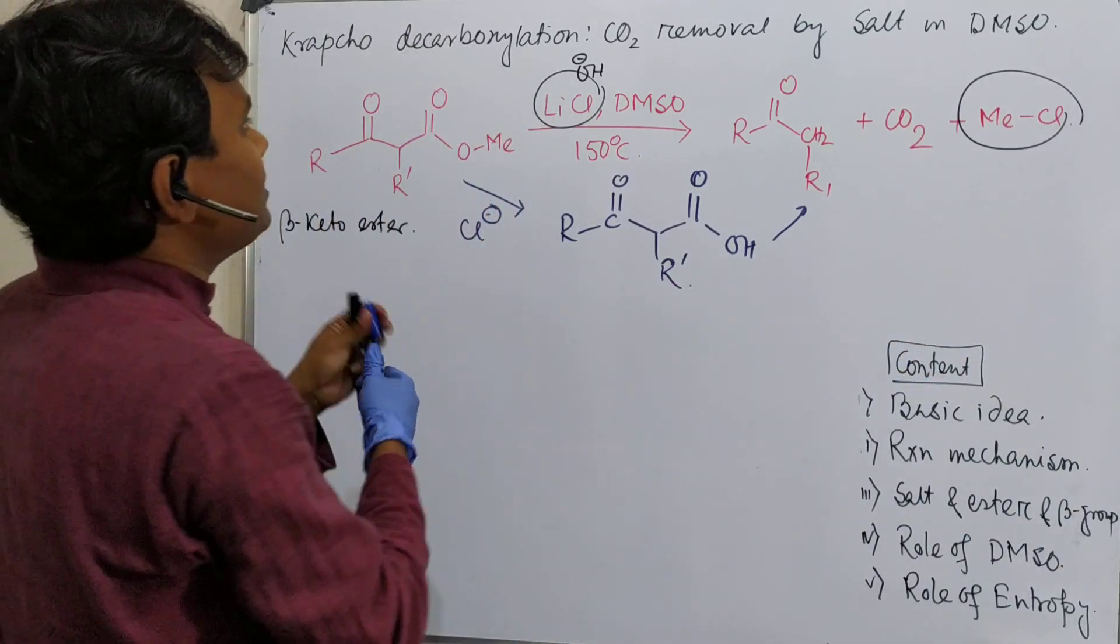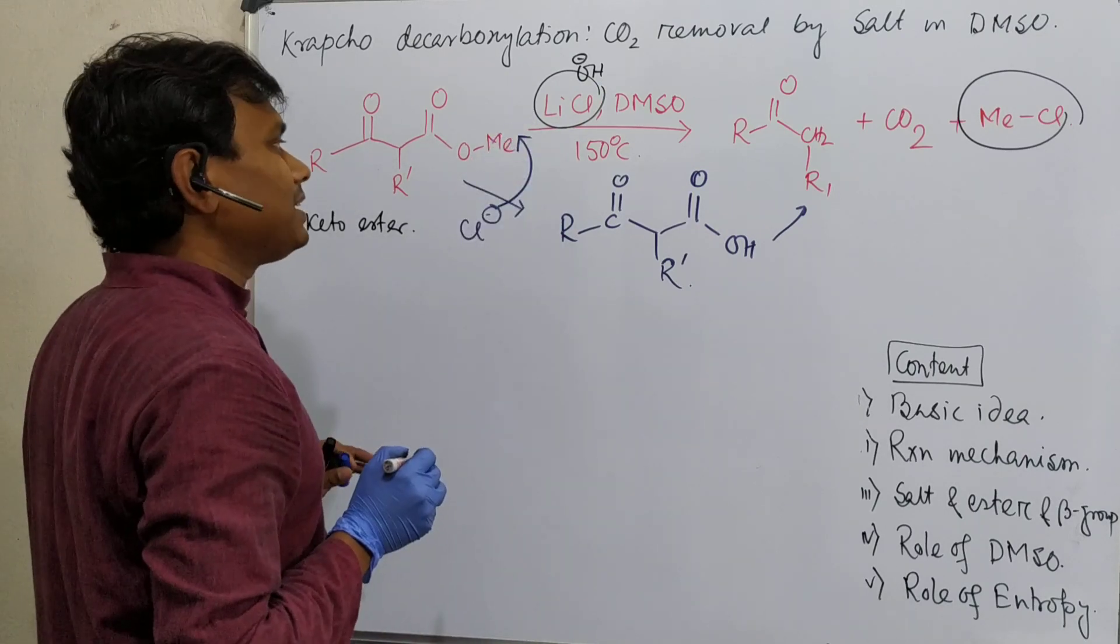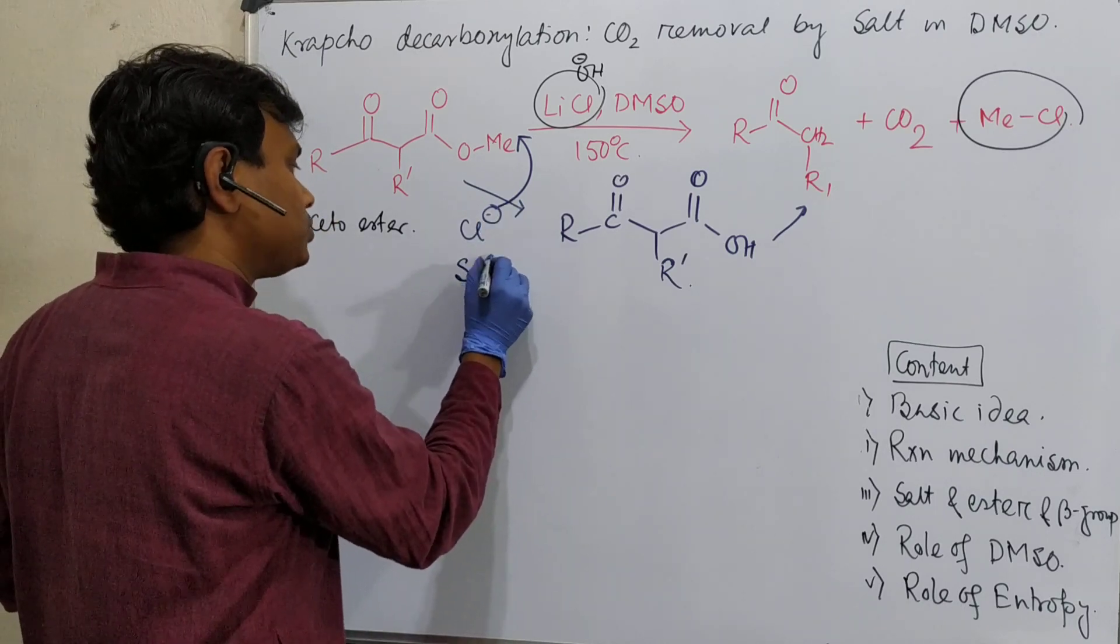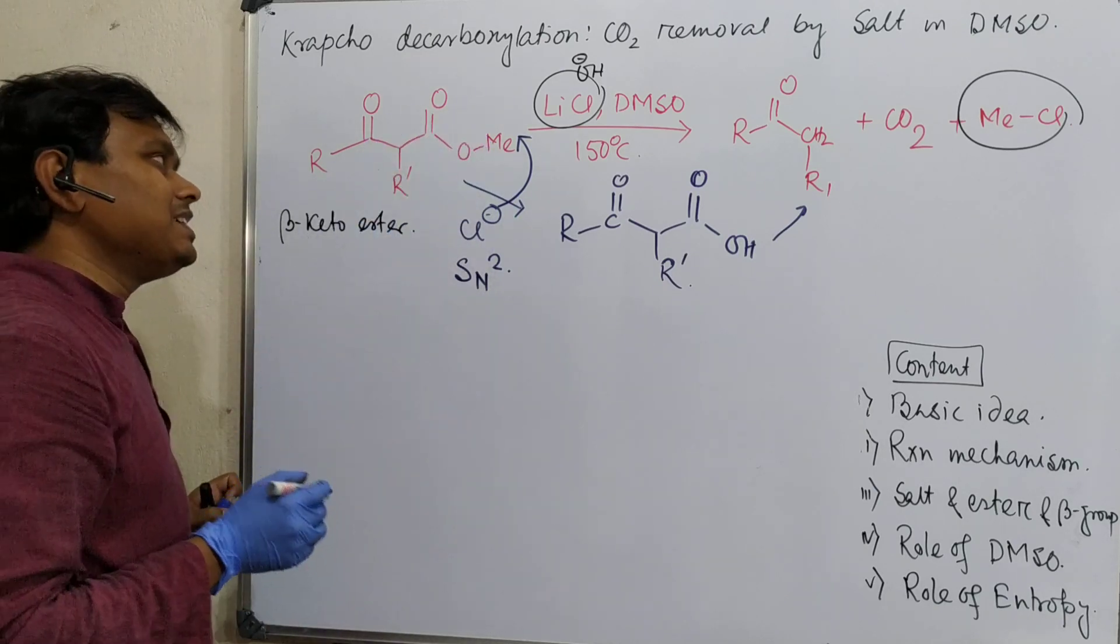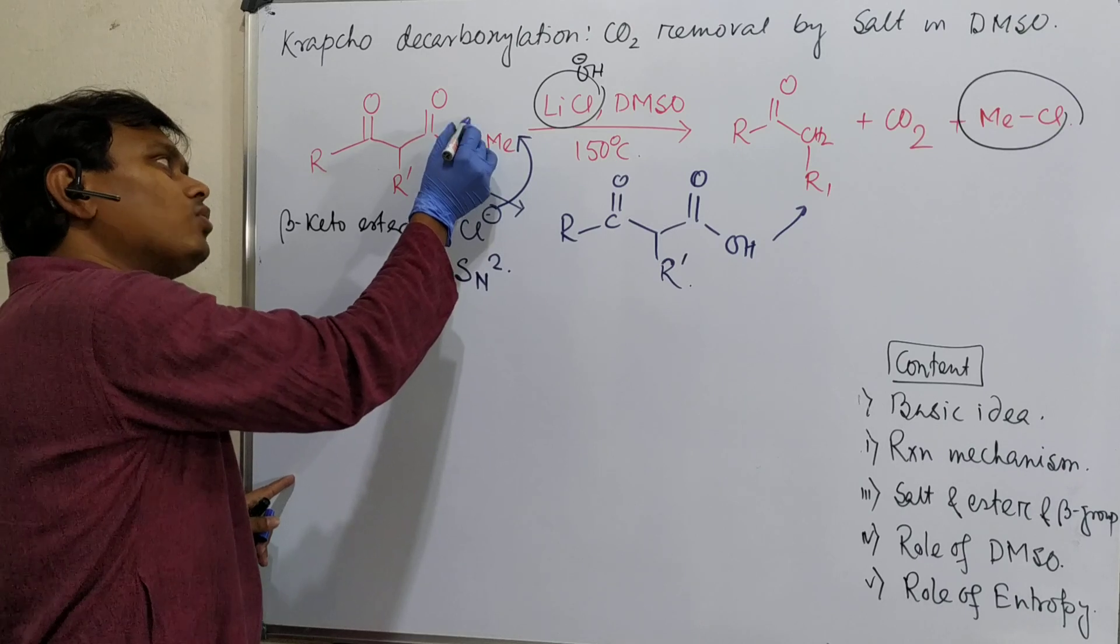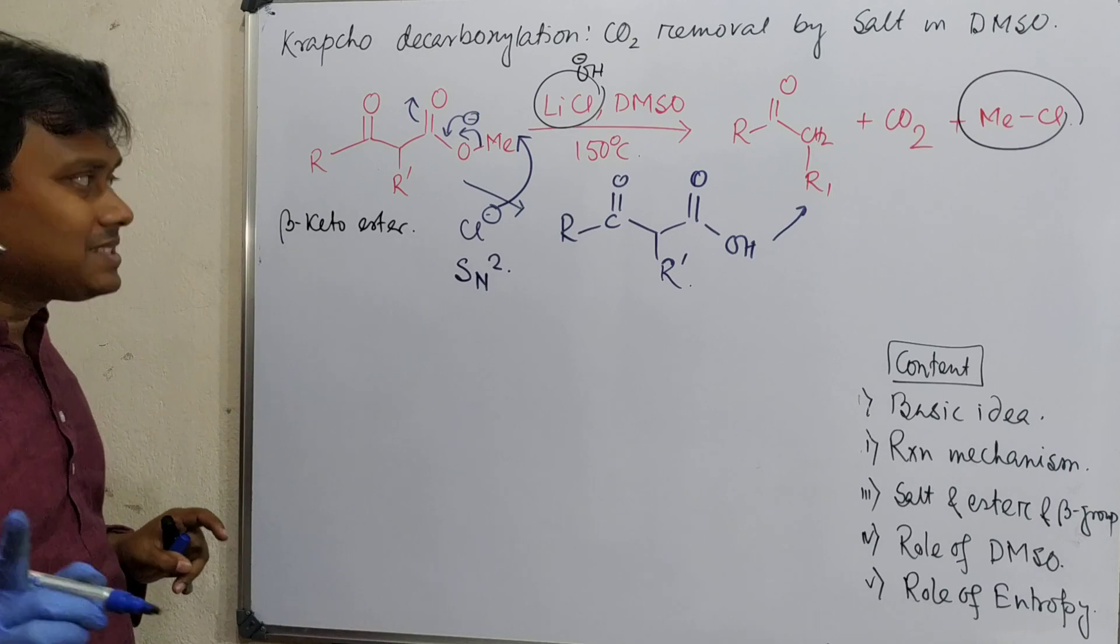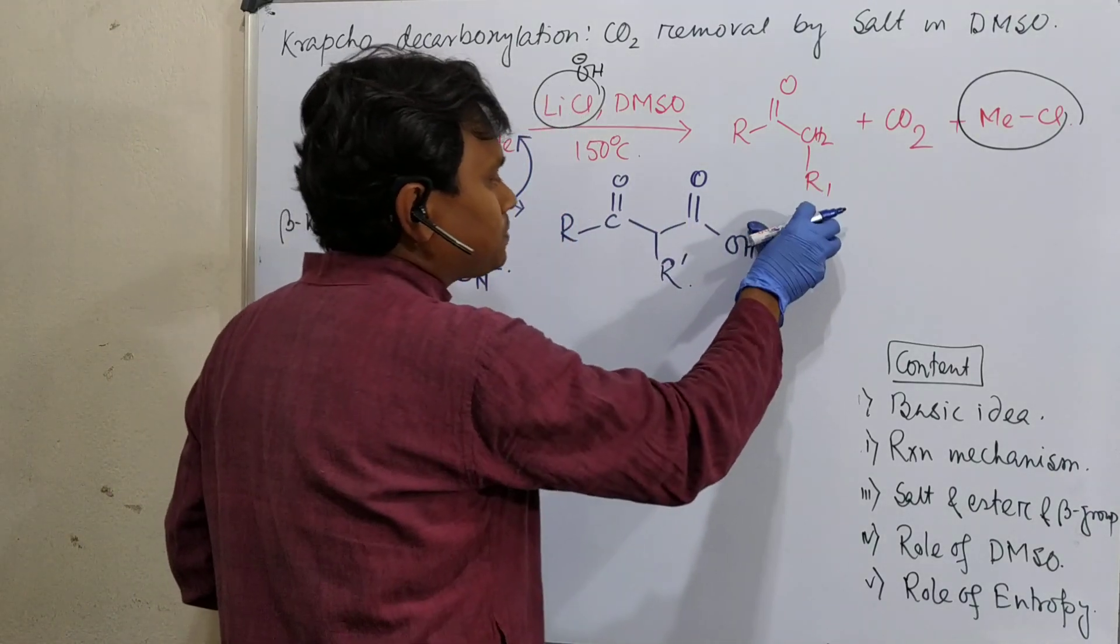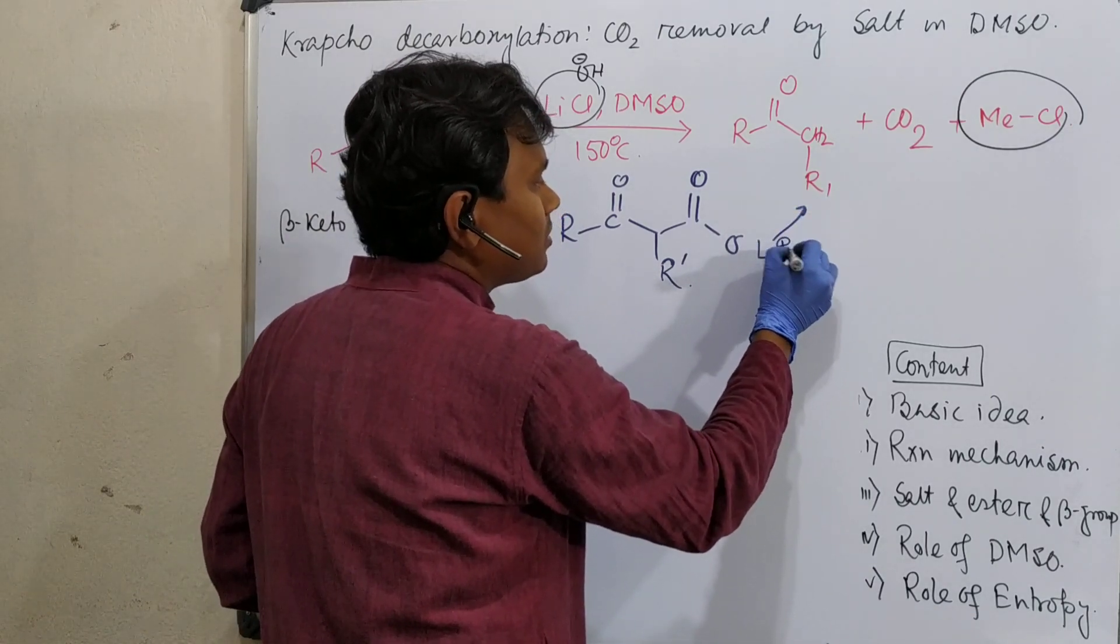So how is this happening? Here the chloride minus first attacks the methyl. So why it can attack and how? This is actually attacking via SN2 process - backside attack on the methyl. Question: Why? Because here this O- leaves. This is resonance stabilized using this.